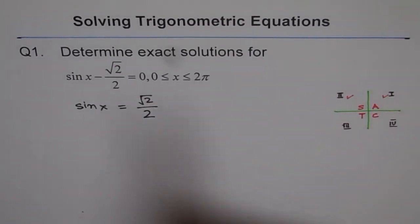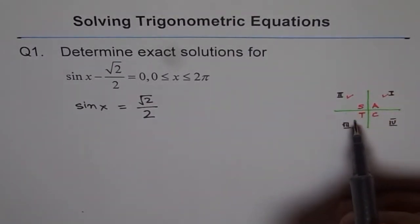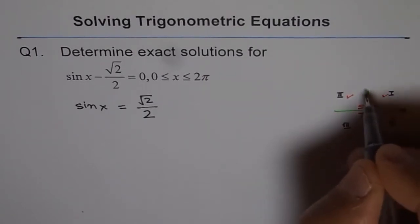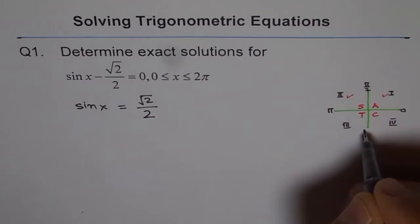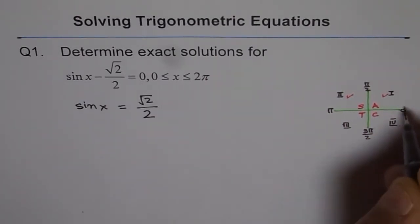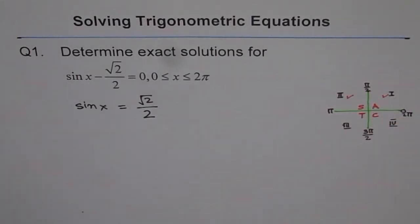Now, we know 0 to 2π, that means we are looking for all the four quadrants. This is 0 for us, this is π/2, π and 2π. So, 0, π/2, pi and then this is 3π/2 and after that we get 2π here. Do you see? That is what we are looking for.